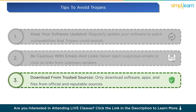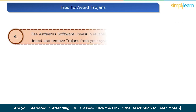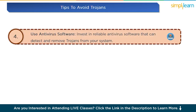Number three: download from trusted sources only. Only download software, apps, and files from official and reputable sources, and avoid shady websites and torrents. Number four: use antivirus software. Invest in reliable antivirus software that can detect and remove Trojans from your system.